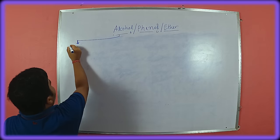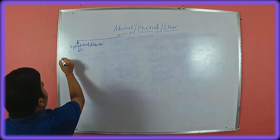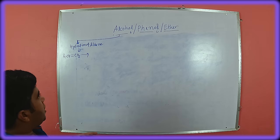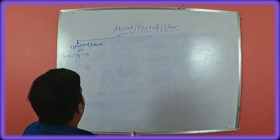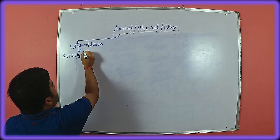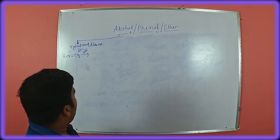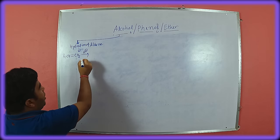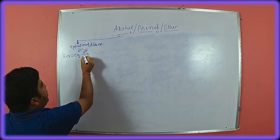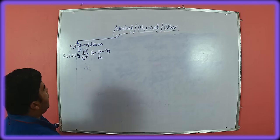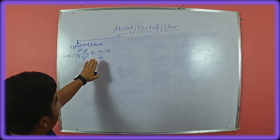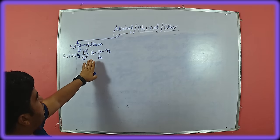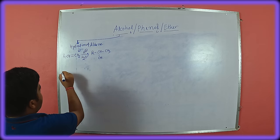First is hydration of alkene. Any alkene can be hydrated — that means addition of water in presence of either acid or another reagent, that is borane. If we add acid and water, then we will get secondary alcohol and this reaction follows the Markovnikov addition rule. Due to this reason, it always gives secondary alcohol.